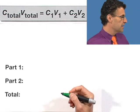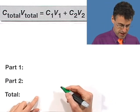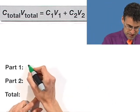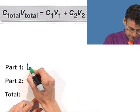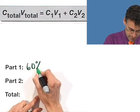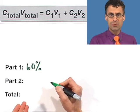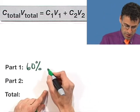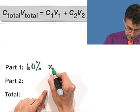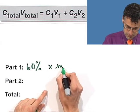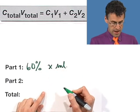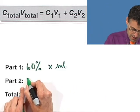So part one. So again, I'm going to add 60%. I'm going to start with the 60%. But how much of that do I need? I don't know. I don't know. So let me call that x.